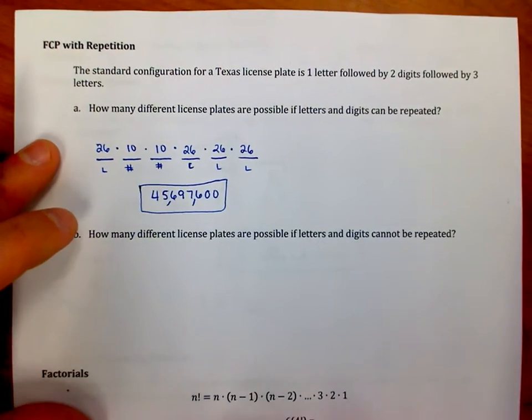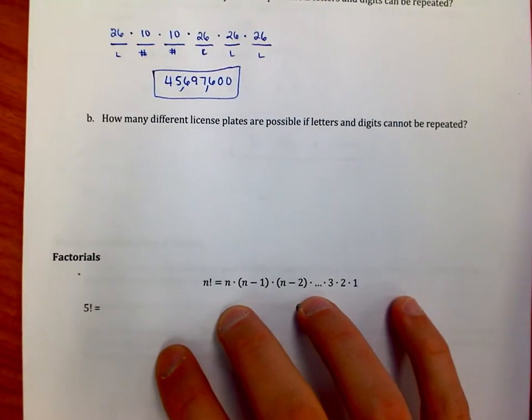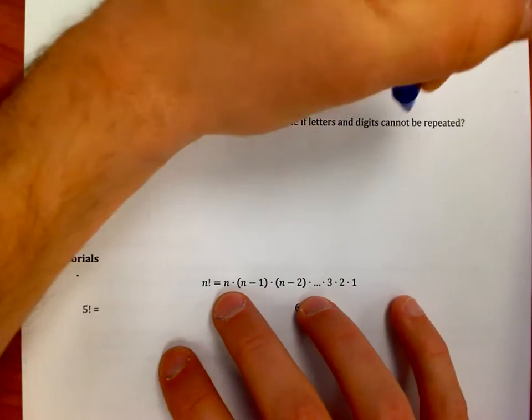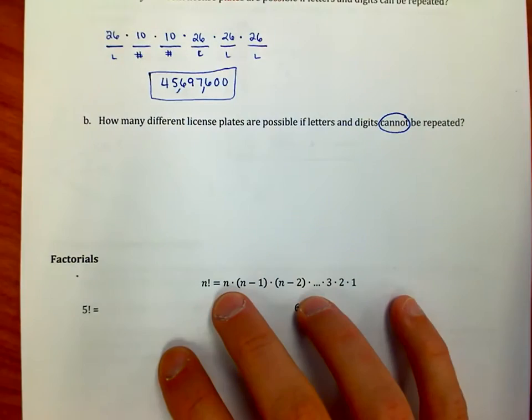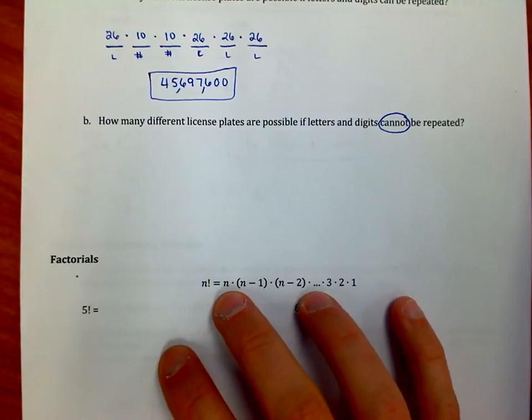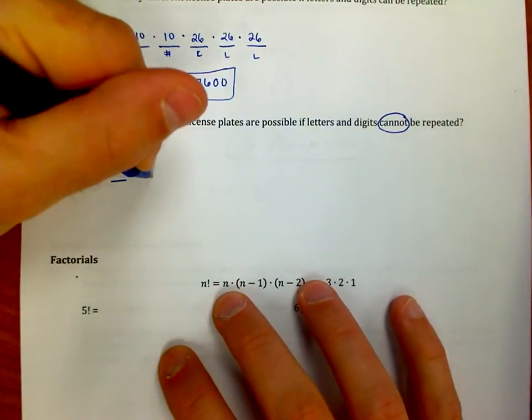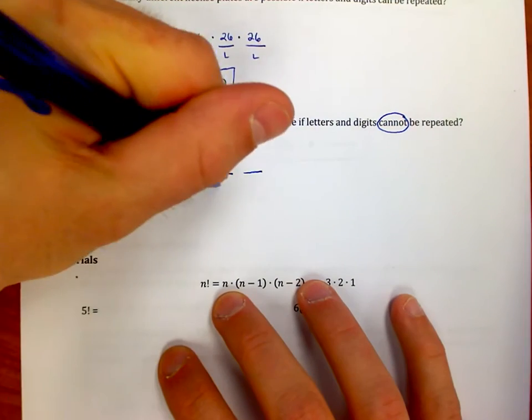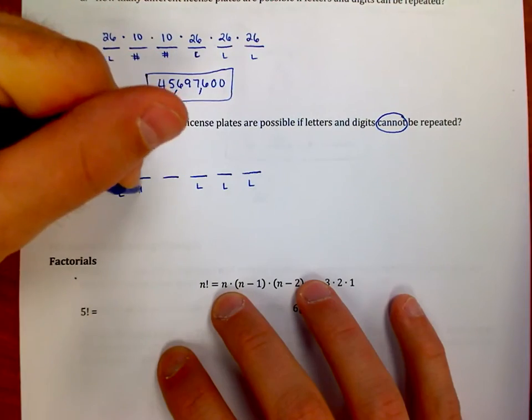Now that's all fine and dandy, but the question could be asked a little bit different. How many different license plates are possible if letters and digits cannot be repeated? So the key here is the fact that if an A is used in the first digit, it can't be used in the second spot. We have once again six spots to choose from: letter, letter, letter, letter, two numbers.